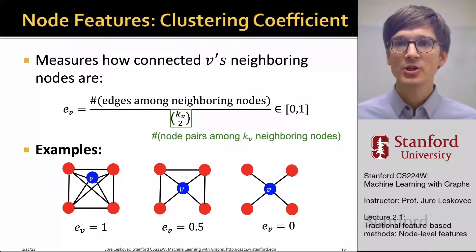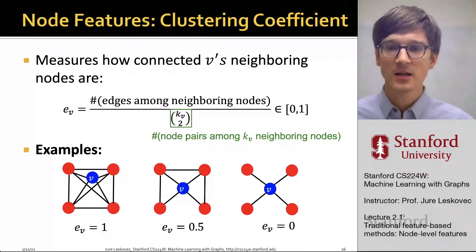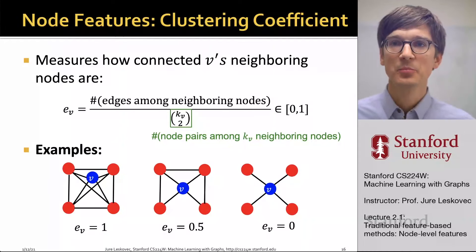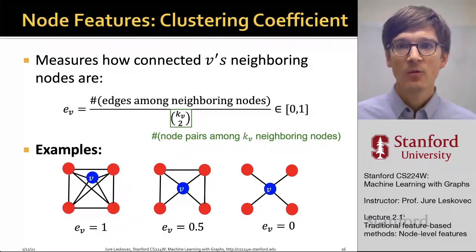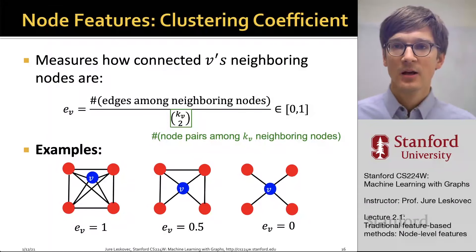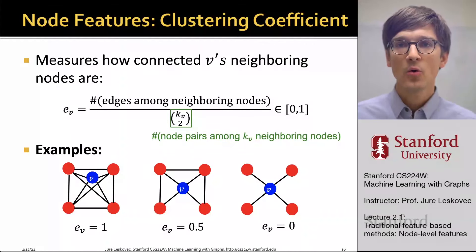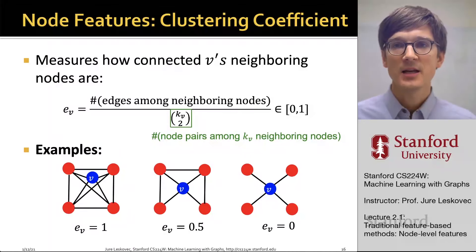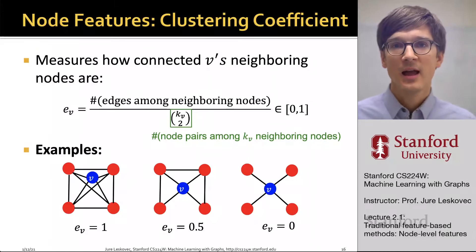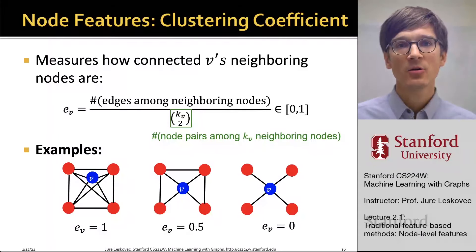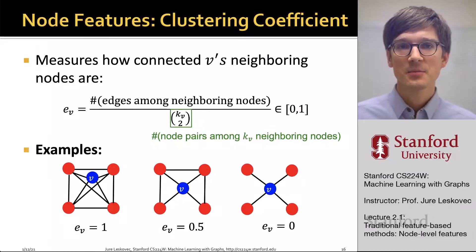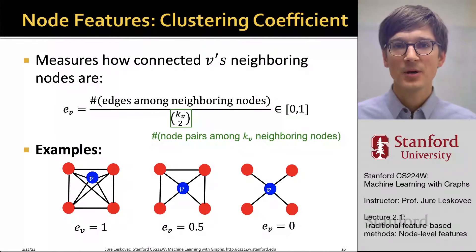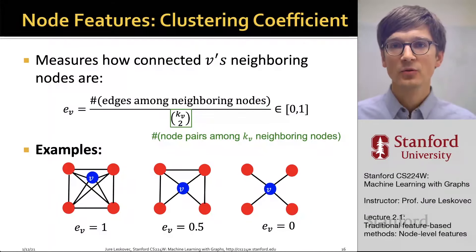Now shifting gears — we are going back to think about node degree and the local structure around the node. Local structure means that for a given node, we only look in its immediate vicinity and characterize the properties of the network around it. A classical measure of this is called clustering coefficient, which measures how connected one's neighbors are — how connected the friends of node V are.